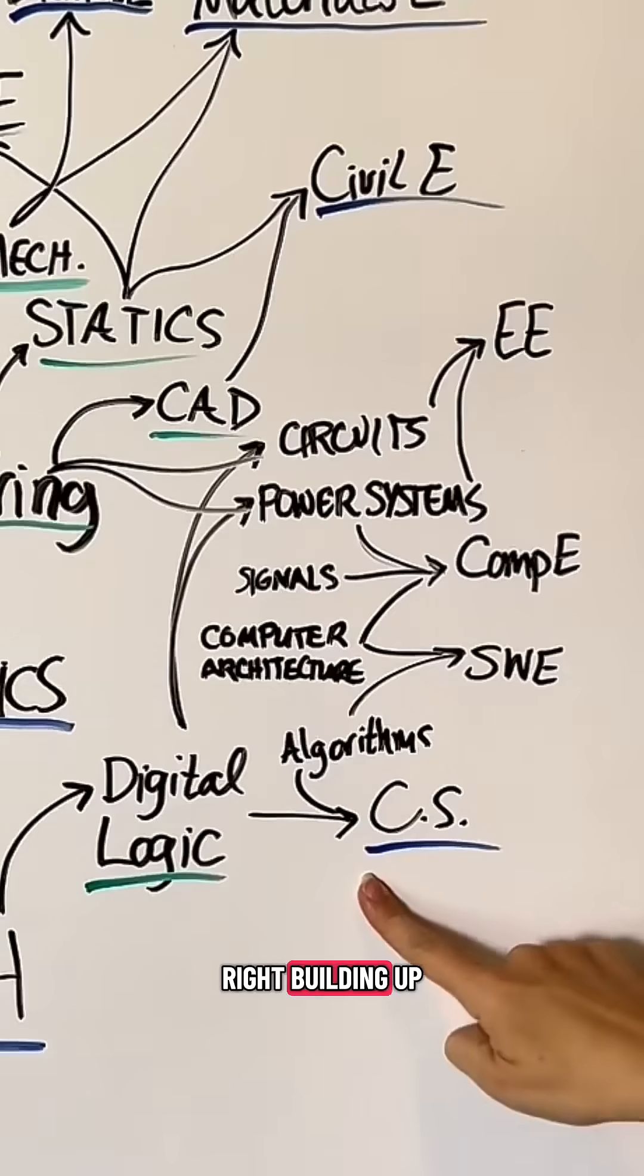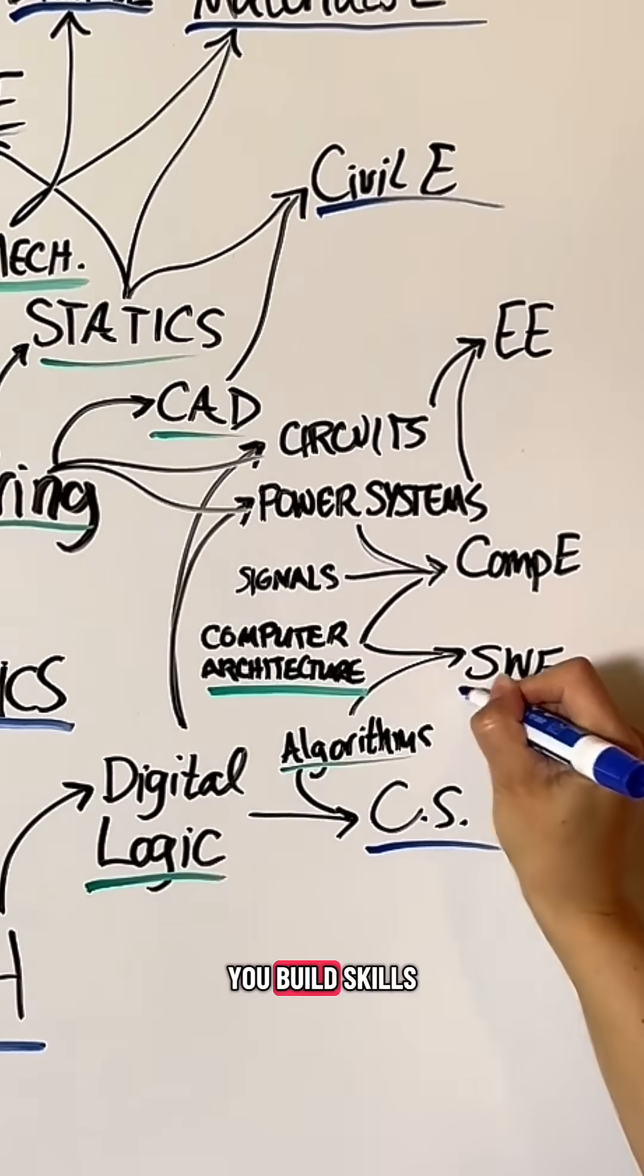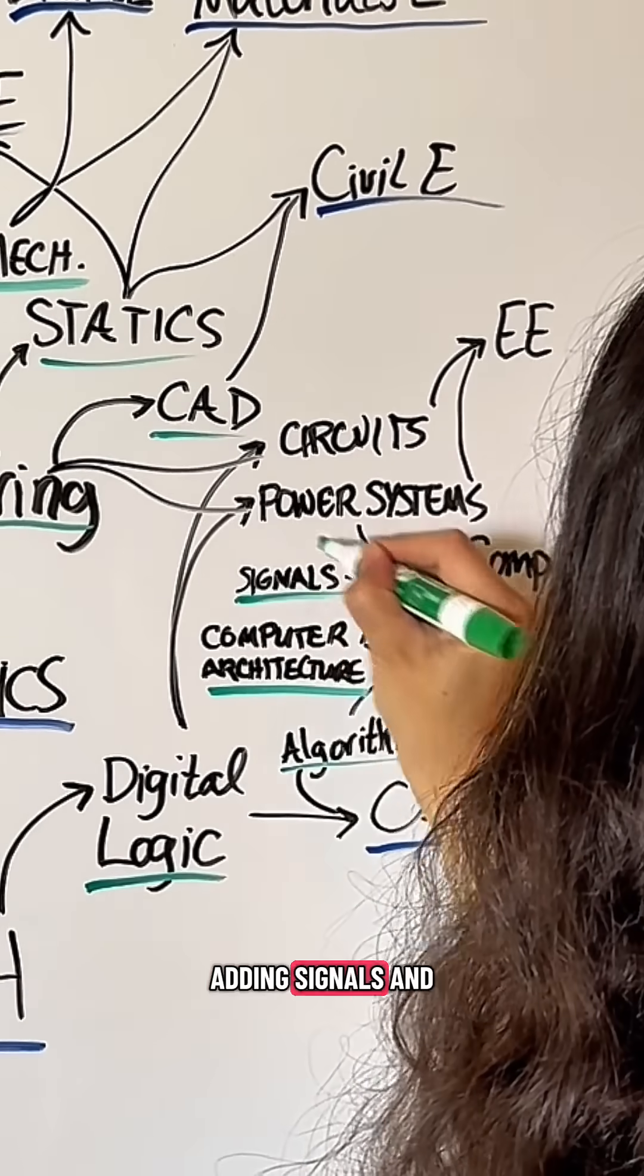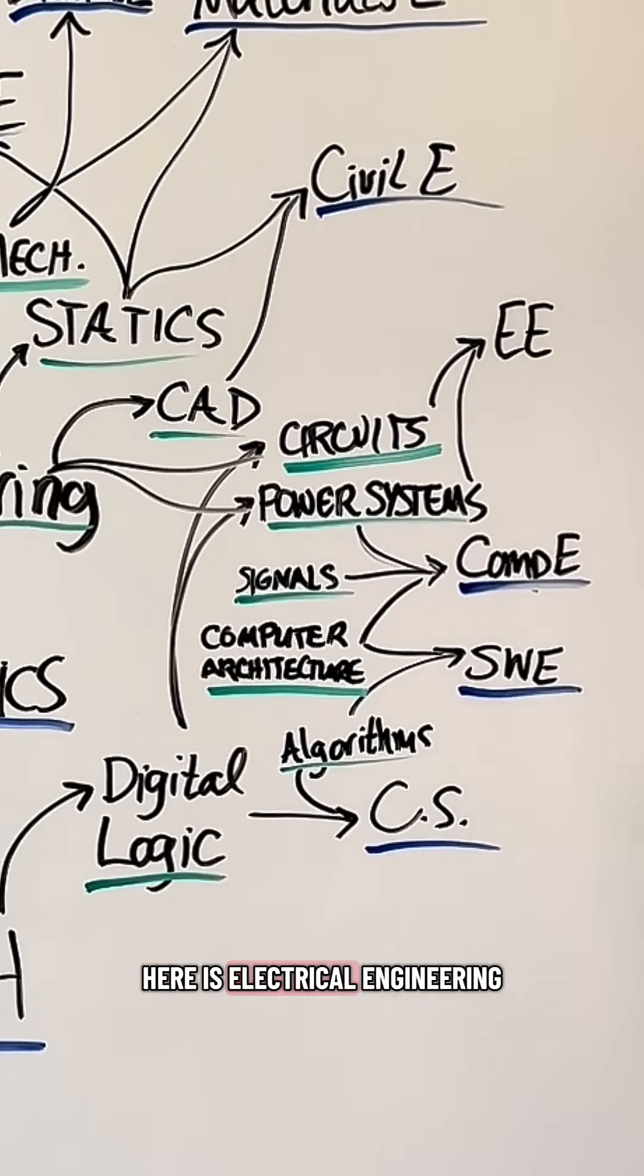On the far right, building up from computer science and adding in computer architecture and algorithms, you build skills to a software engineering tree. Adding signals and power systems to those skills, we have computer engineering. And leaning deeper into power systems and circuits at the top here is electrical engineering.